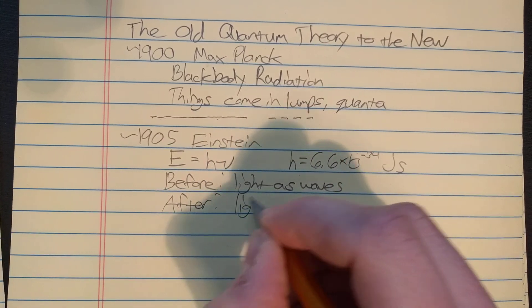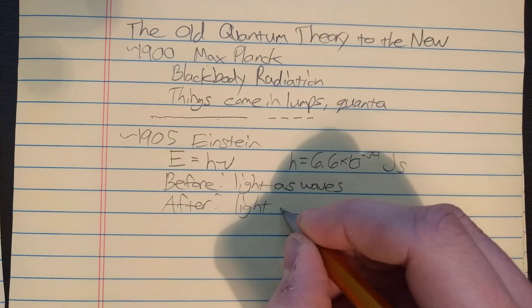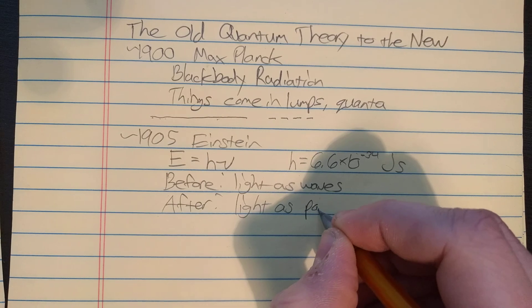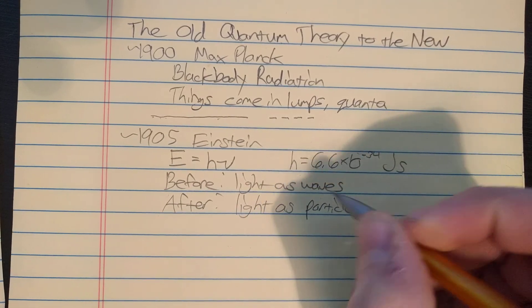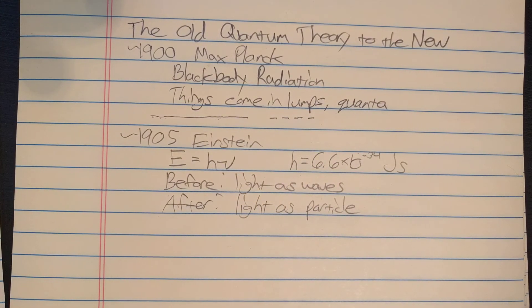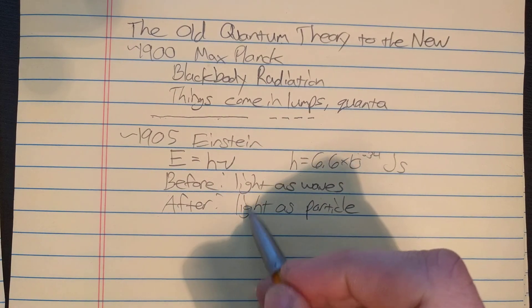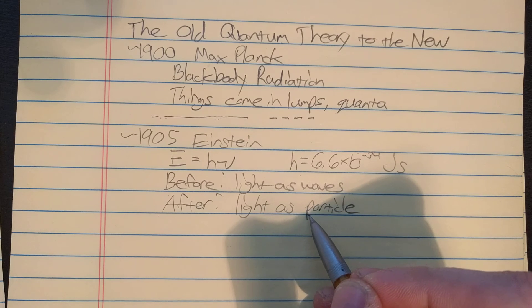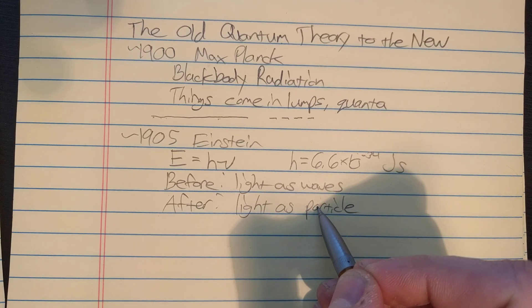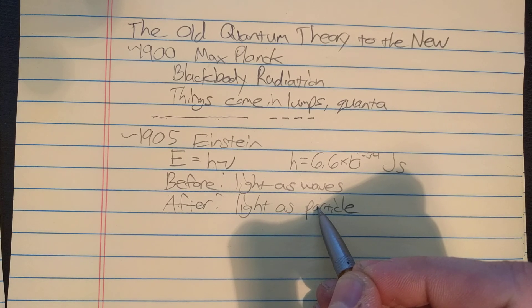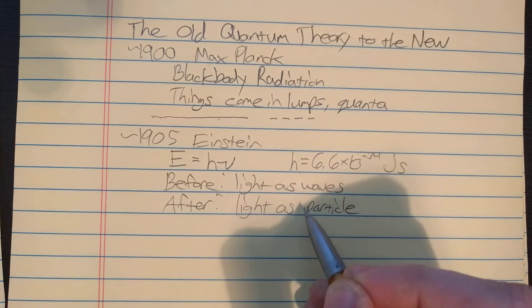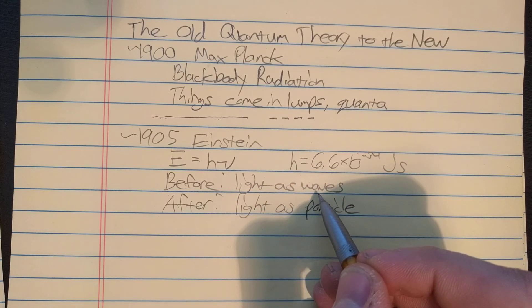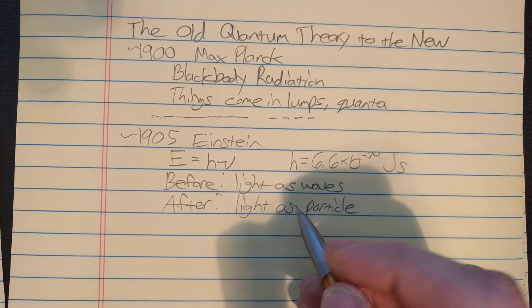After Einstein, light was more and more thought of as particles, because Einstein gave us the term photon. Scientists were now switching between thinking about light as waves and thinking about light as particles. The way you thought about it made the results of some experiments easier. But really, light is both of these. It's not exactly one or exactly the other.